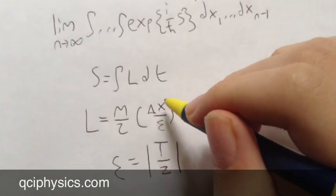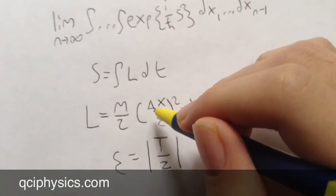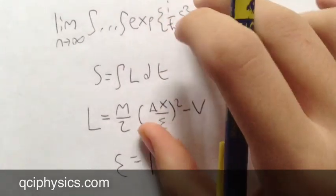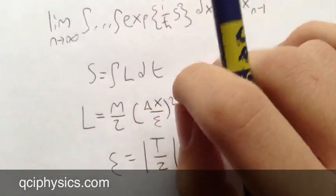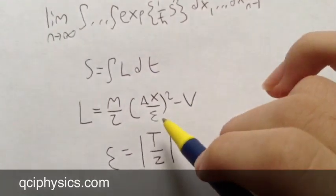That's because epsilon describes the relative sizes of each of the time slices. And delta x, of course, describes the difference between x_j plus 1 and x_j. So it's the difference in x values between two adjacent positions in this discrete path, and epsilon's the size of the time slices.